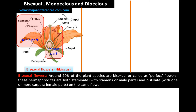The female part consists of stigma, style, and ovary, which is called a carpel. A flower with all the whorls — sepal, petal, and gynoecium and stamen and carpel — is called a perfect flower. 90% of plant species have perfect flowers or bisexual flowers.